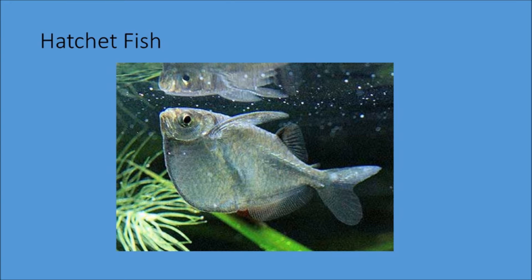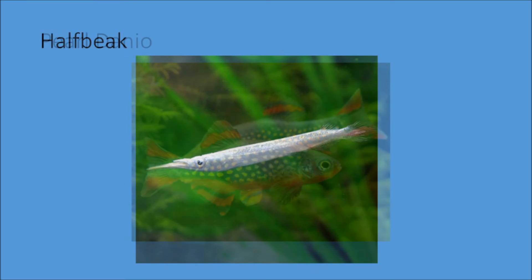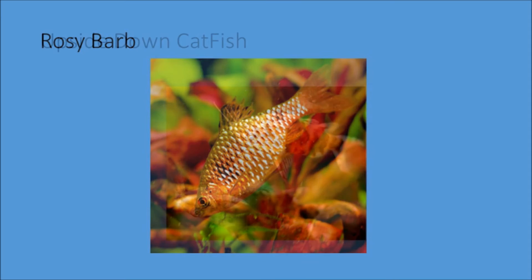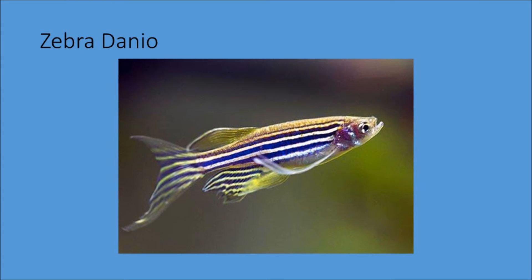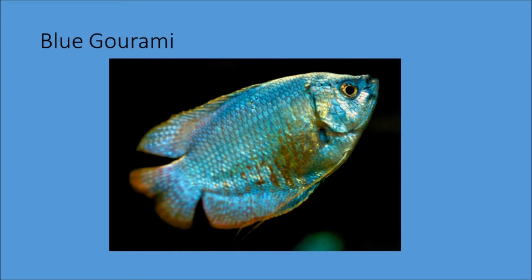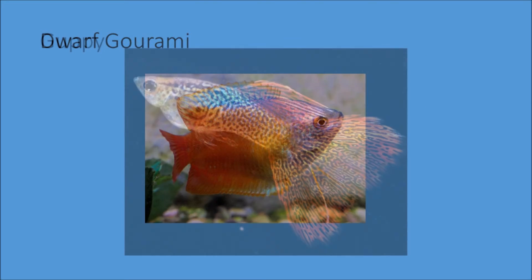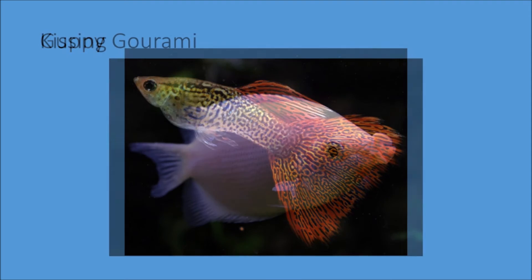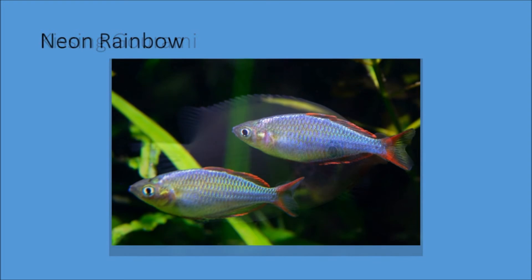Popular top-dwelling fishes include common hatchet fish, half beak, pearl danio, rosy barb, upside down catfish, zebra danio, bosemani rainbow, blue gourami, congo tetra, dwarf gourami, guppy, kissing gourami, and neon rainbow fish.